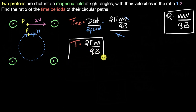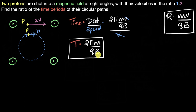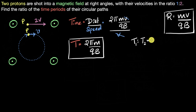What's interesting is there is no speed in the time period expression. So comparing the two protons: they have the same mass, the same charge, and are thrown in the same magnetic field. Their speed doesn't matter, which means the time it takes each to complete a circle is exactly the same. The ratio of time periods T1 to T2 is one to one.